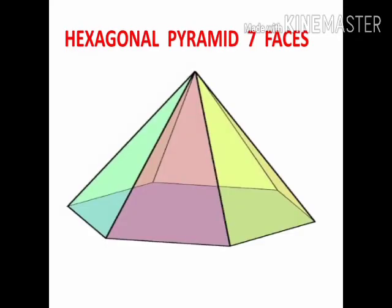Hexagonal pyramid. Hexagon means six sides, right. It has a base of six, and on each side, one triangle. So total seven faces. The base is a hexagon and six triangles on each side.